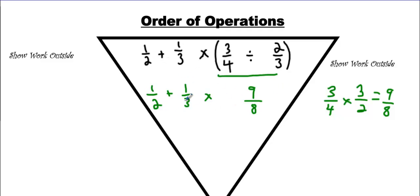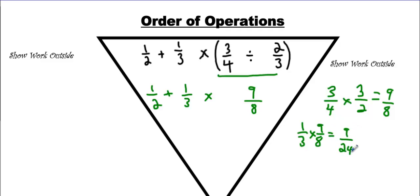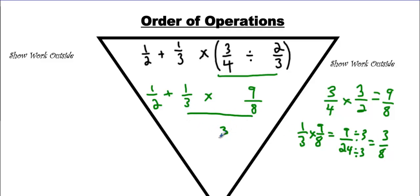Now we have a new equation. We have adding versus multiplying. What comes first? Multiplying. So we're going to do that on the side. One third multiplied by 9 over 8 — that's not very hard. That's going to make 9 over 24. But reduce it — make life simple. You can divide by 3. That's going to make 3 over 8. Let's underline it. We'll write 3 over 8 plus 1 half.